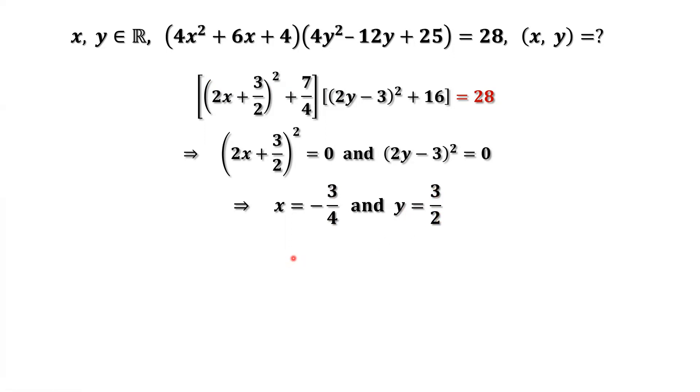Therefore, the final solution for this equation is x, y equals negative 3 over 4, 3 over 2. That's all. Thanks for watching and see you next time.